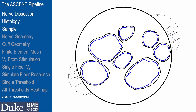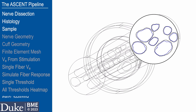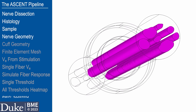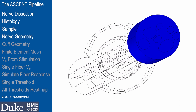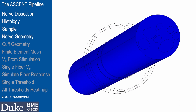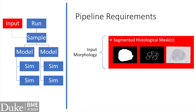First, we need to define the nerve morphology. ASCENT currently models 3D nerves by using a 2D cross-section of the nerve and fascicles. This 2D cross-section is extruded in the longitudinal direction to generate a three-dimensional nerve. The 2D cross-section is defined using input masks, which are binary images of segmented histology. See the documentation page on Morphology input files for resources on image segmentation.